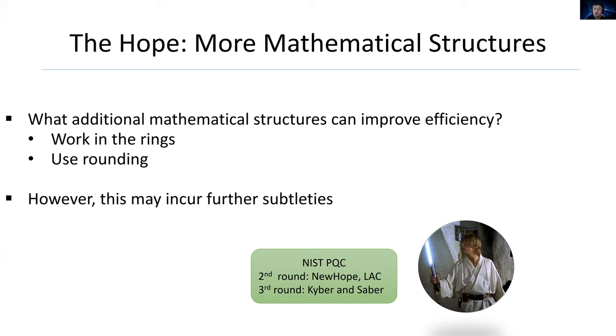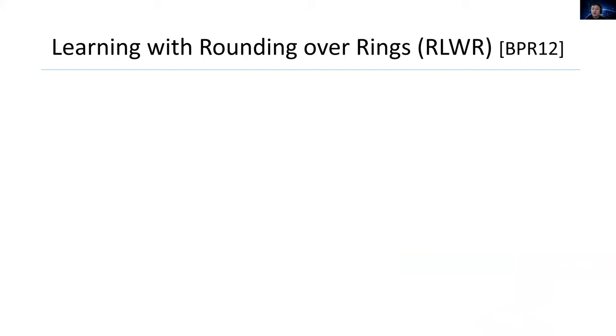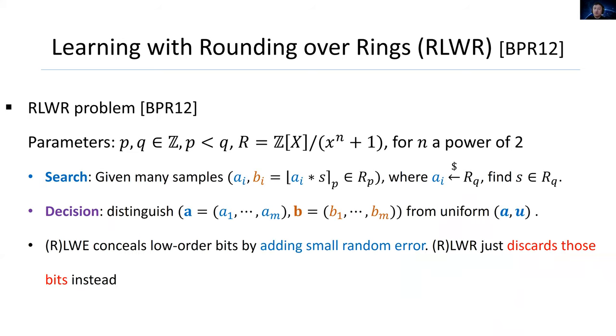However, working with additional mathematical structure may incur further subtleties. For example, which ring should be chosen, and how to round? Actually, these are exactly the motivations of Learning with Rounding over Rings, or ring LWR. So we formulate the definition of ring LWR, which was firstly proposed by Banerjee, Peikert, and Rosen in 2012.